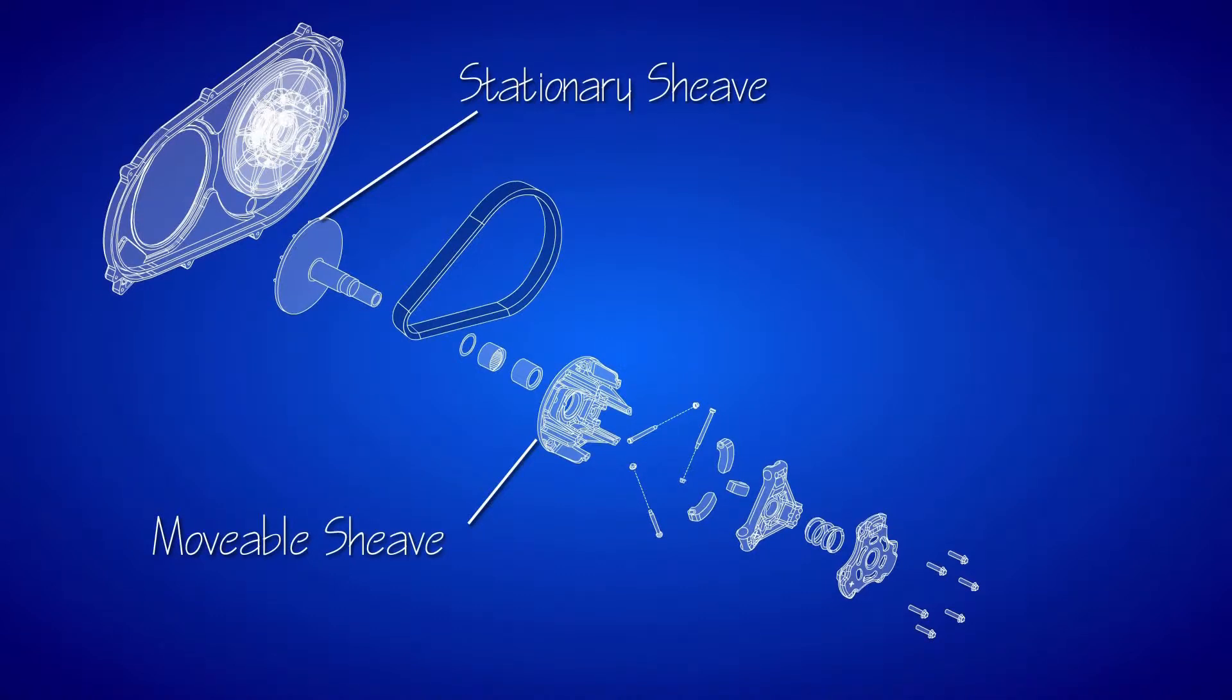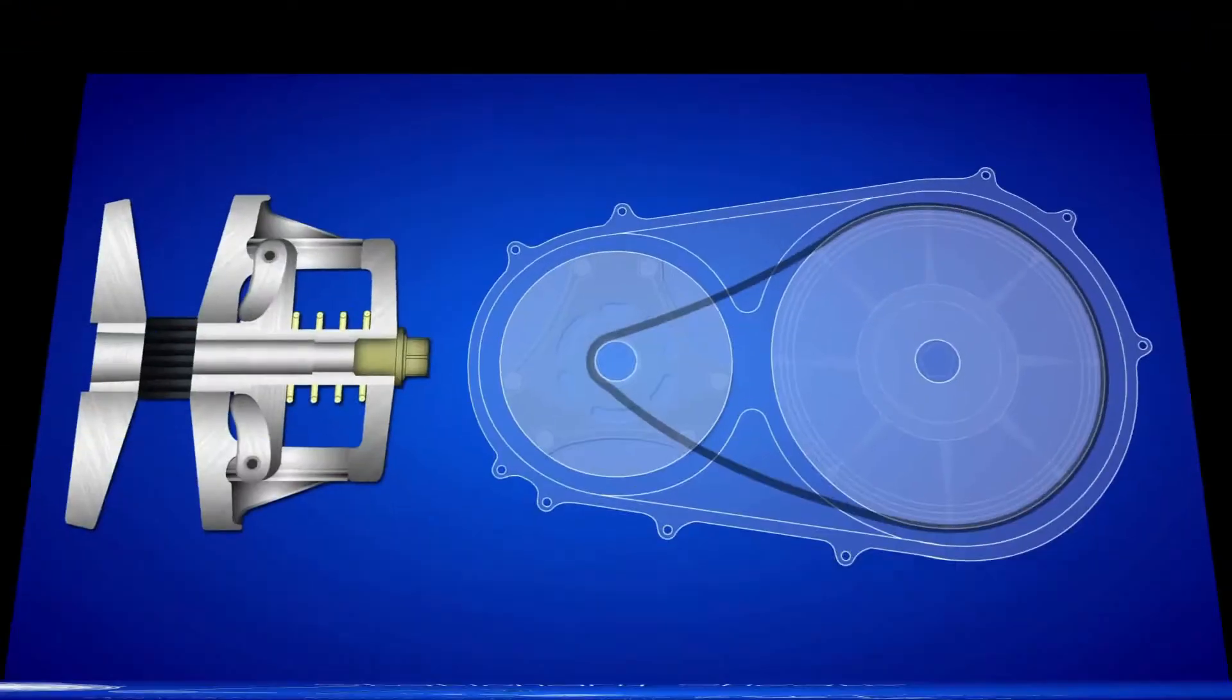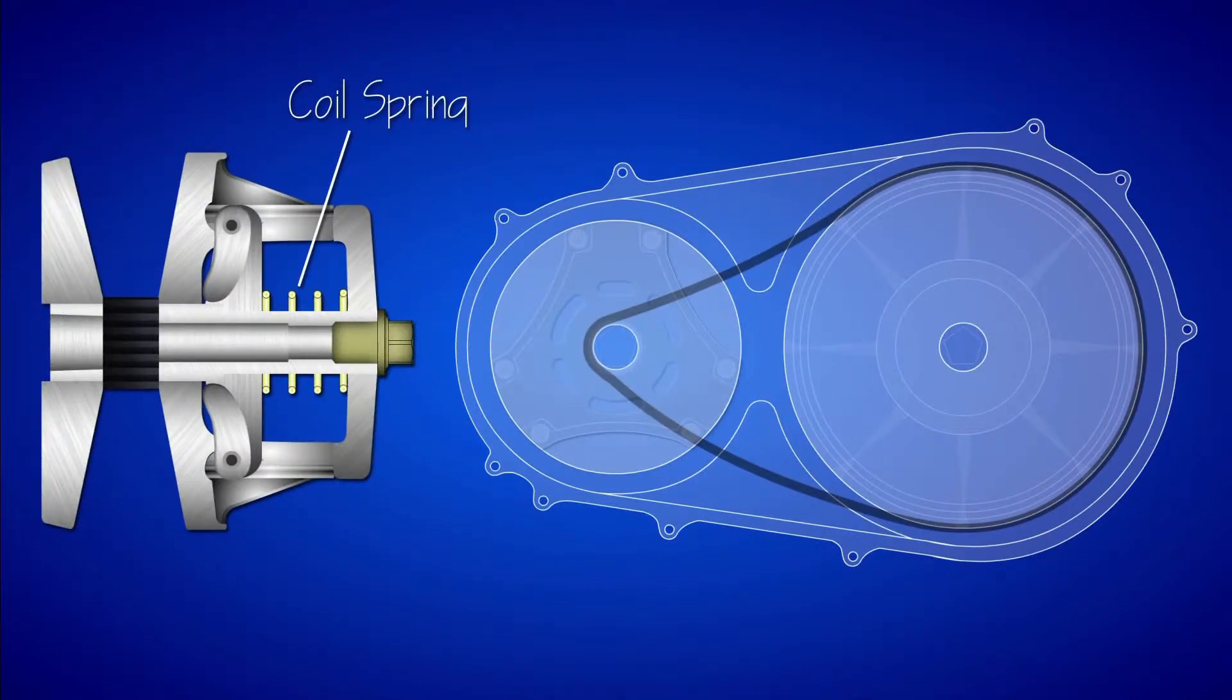Within the movable sheave is an arrangement of shift weights and a coil spring. The coil spring is designed to hold the drive clutch open, and the shift weights assist with the movement of the movable sheave as they respond to the centrifugal force when the drive clutch spins.